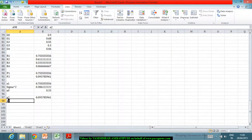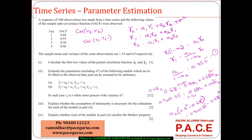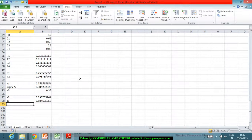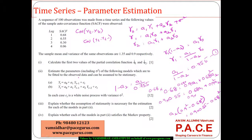From a2, I can compute a1. Using a1 = (1 - a2)×ρ1, where ρ1 ≈ 0.755, a1 comes out to approximately 0.684.